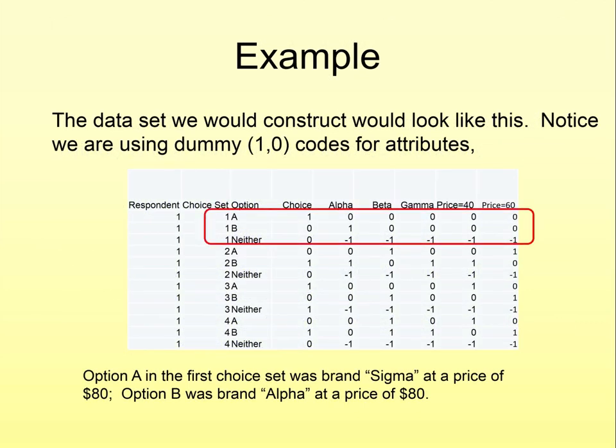So here's an example. Note that we have the same matrix that we had before, but now everything is converted to dummy codes, and instead of having two rows for each choice set, we now have three, where the third line represents the attributes of the neither alternative, where all its attributes are minus one.